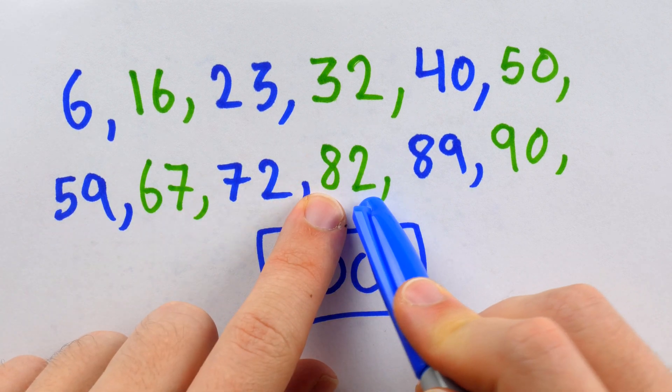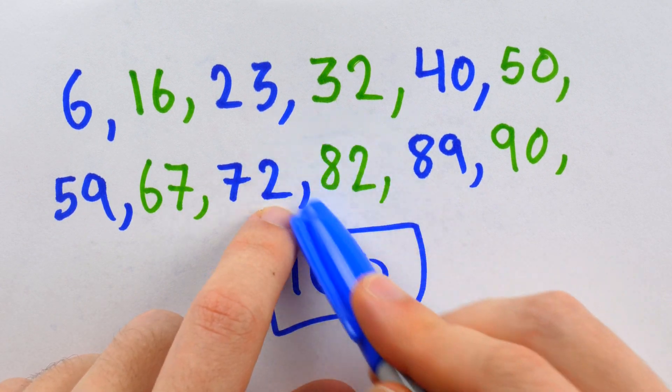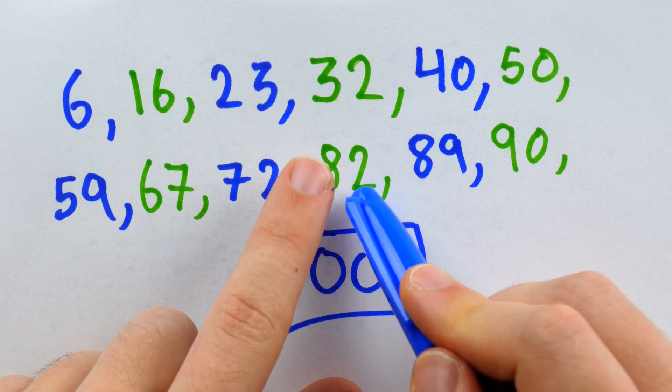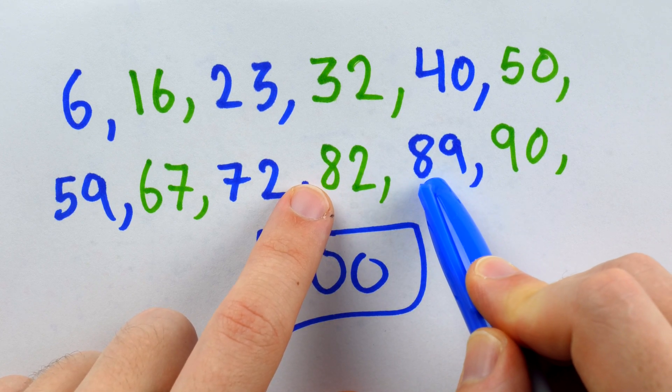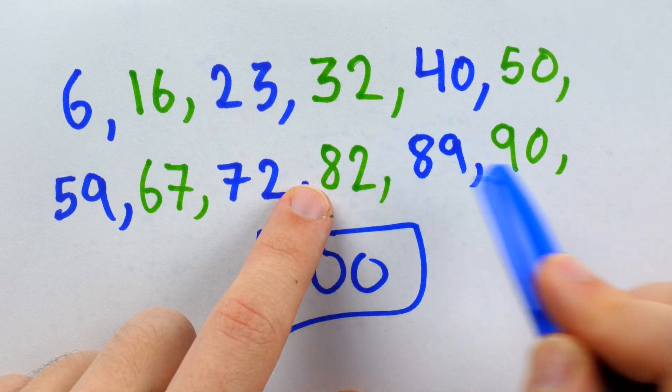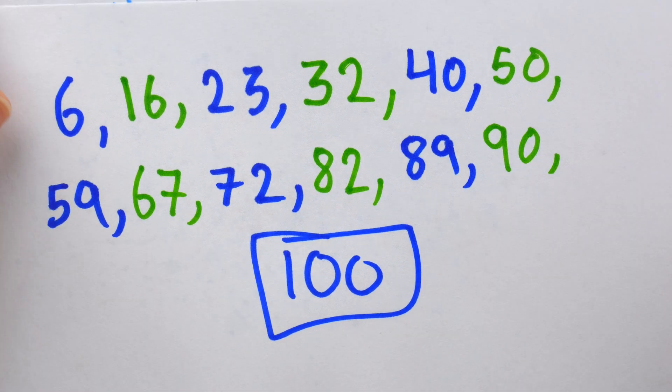Thus, when the green player adds 10 to this to get to 82, that was a disastrous play because after getting to 82, the blue player is able to add 7 to get to 89, which thus forces the green player to then move this into some number between 90 and 99 where the blue player is going to have a guaranteed win.